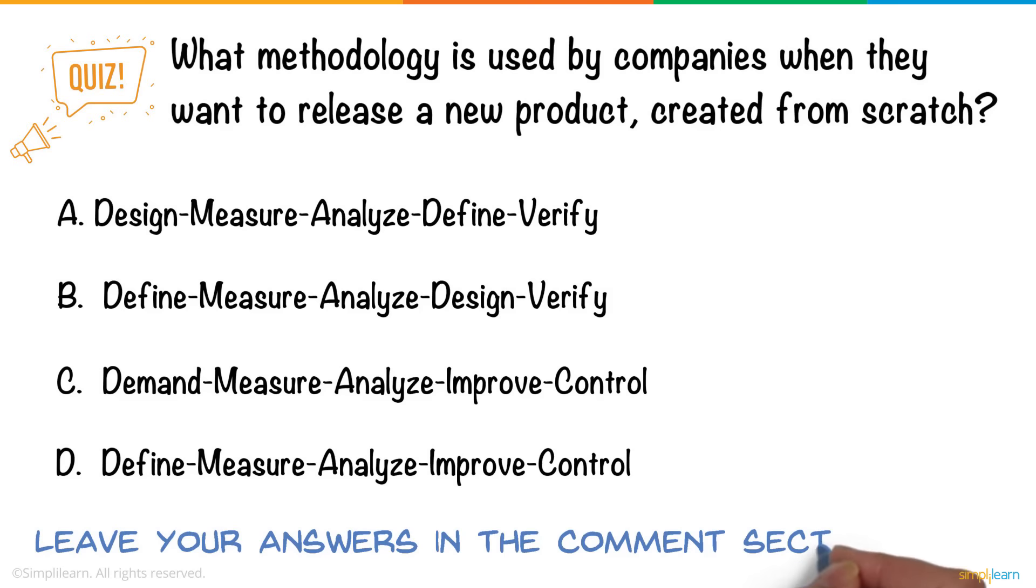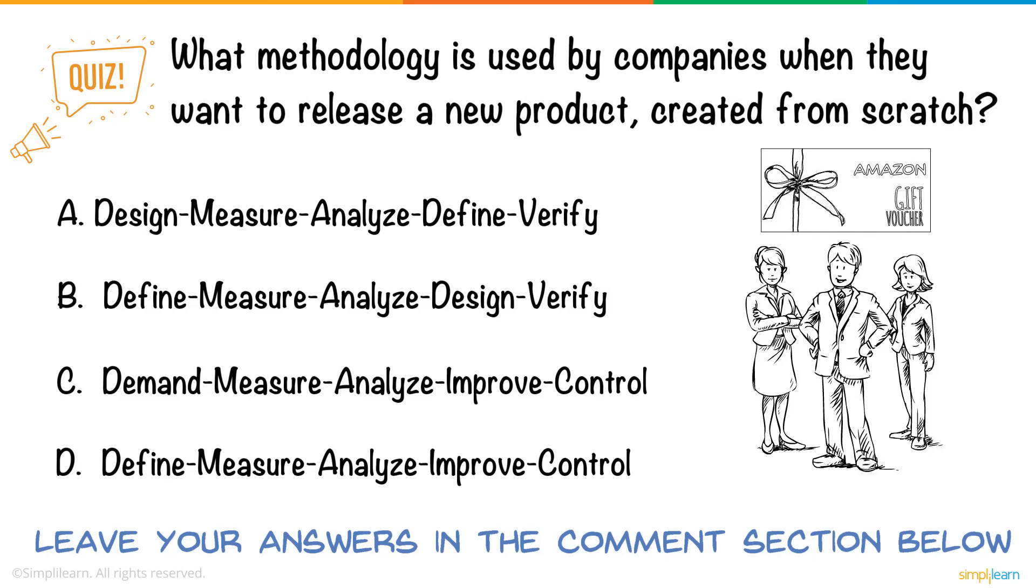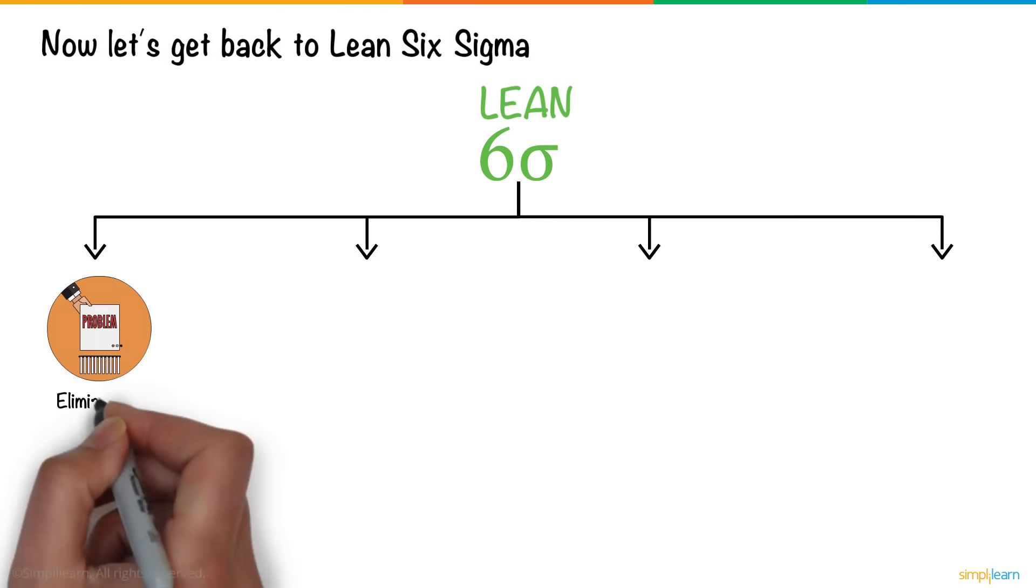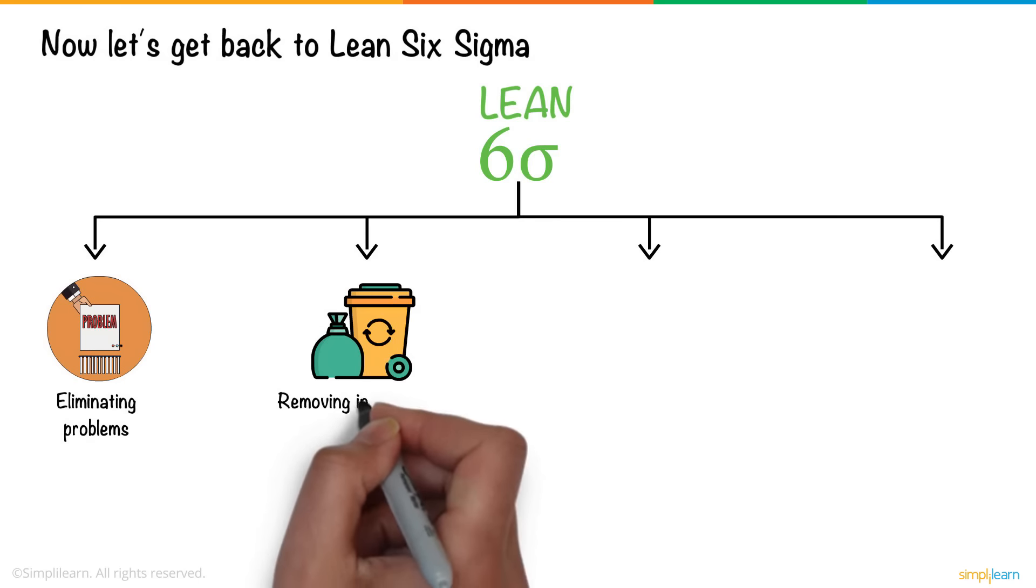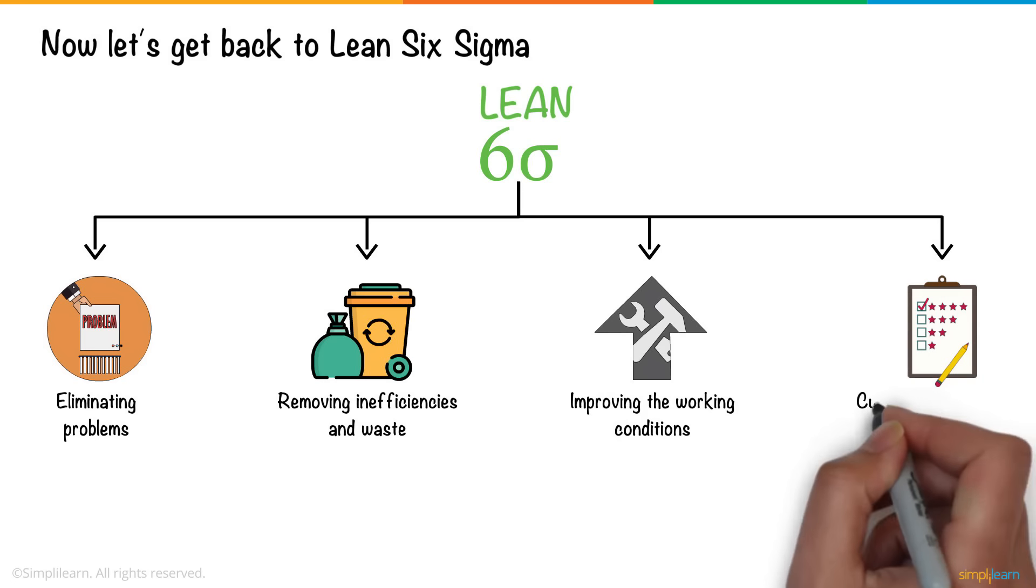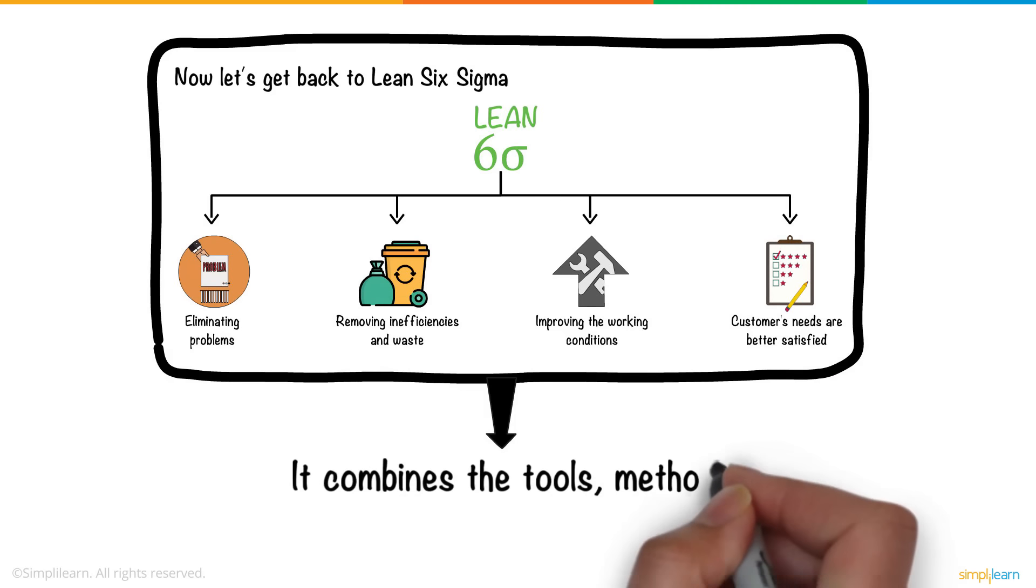Leave your answers in the comments section below for a chance to be one of three people to win an Amazon voucher. Now, let's get back to Lean Six Sigma. Lean Six Sigma is a methodology that focuses on eliminating problems, removing inefficiencies and waste, while improving the working conditions to ensure the customer's needs are better satisfied. It combines the tools, methods, and principles of Lean Six Sigma. We'll have another video detailing the process of Lean Six Sigma very soon.